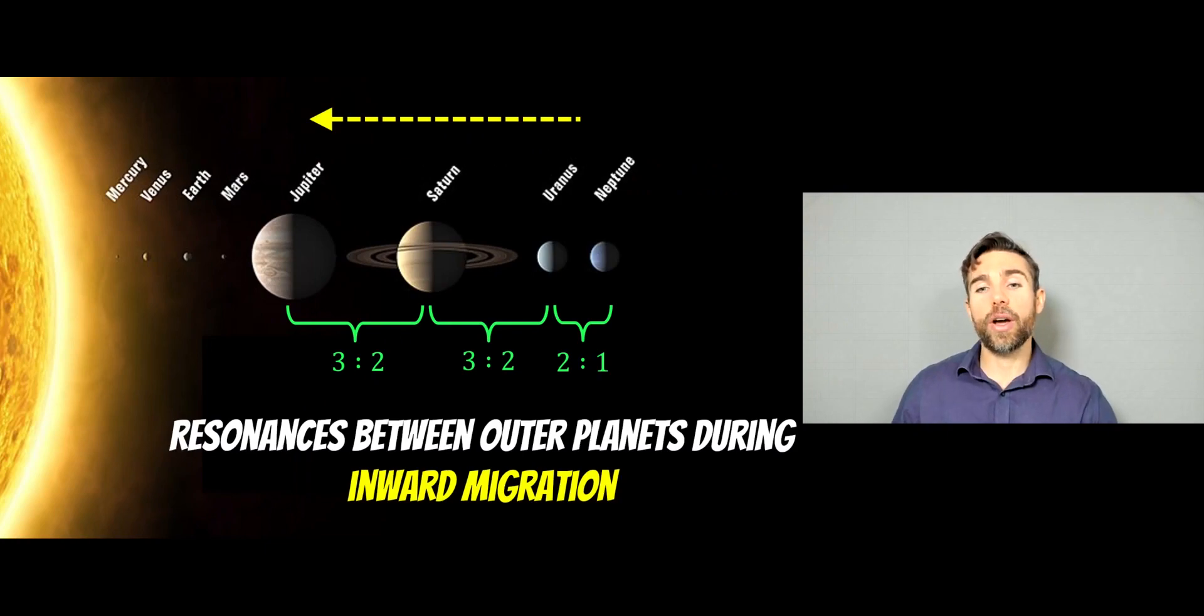However, early on in the solar system, that wasn't the case. So as the planets were forming, the outer planets would have formed further out, but they were expected to migrate inwards. There was actually resonances between the planets. When we say resonances, we mean that the time it takes for one planet to go round the sun is some ratio of another one.